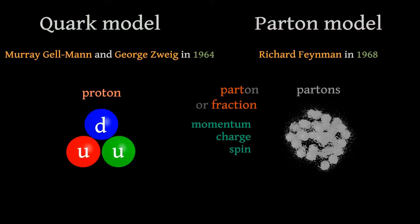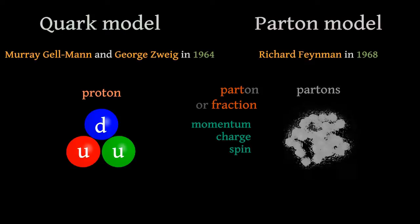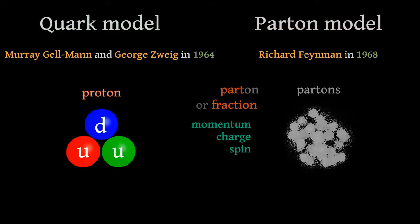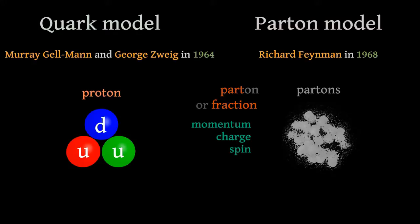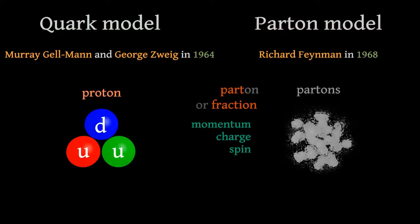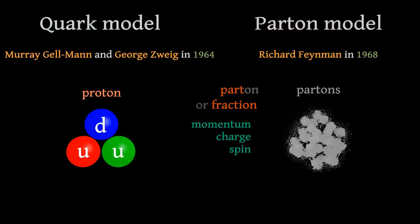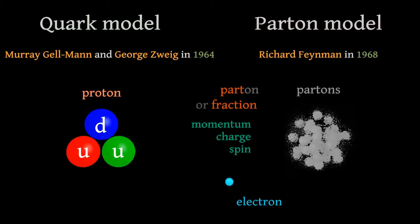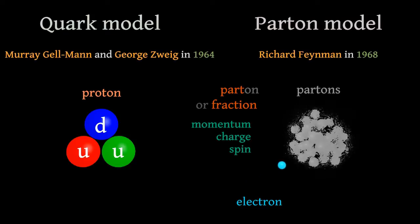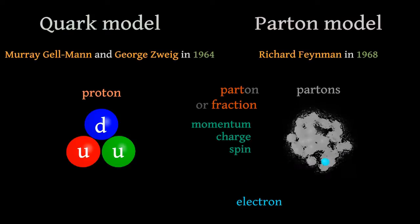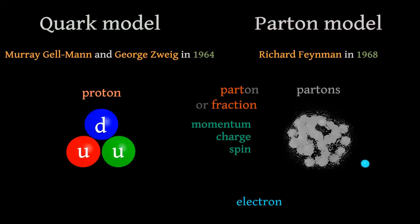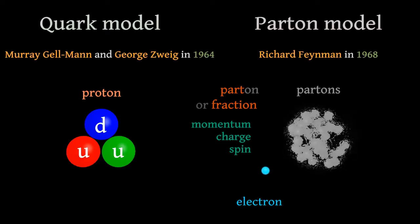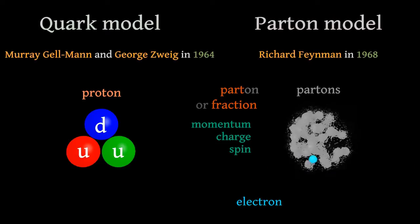its spin, and so on. In principle, the number of such Partons inside the proton is not restricted, that is, it is arbitrary. When an electron or other elementary particle collides with the proton, it interacts with these Partons.